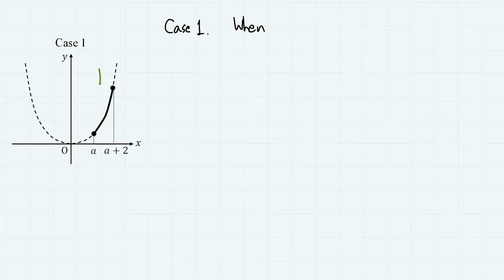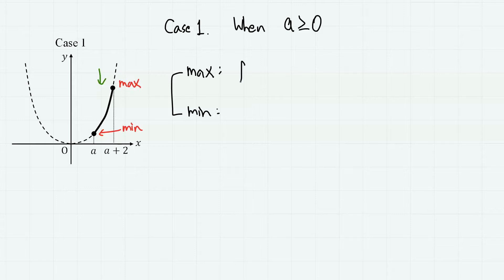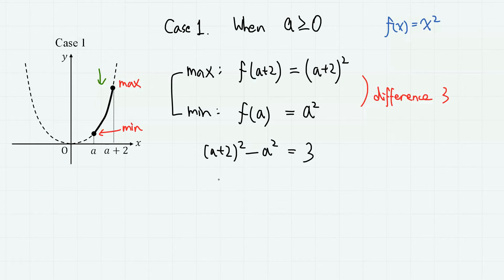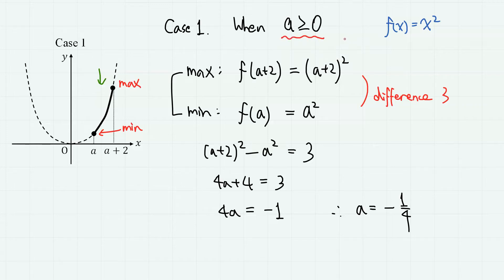In the first case, the domain is on the far right side, where a ≥ 0. The maximum value of f(x) occurs at x = a + 2, so it is (a + 2)². The minimum value is at x = a, so it is a². The difference must be 3: (a + 2)² − a² = 3. Expanding, a² cancels and we get 4a + 4 = 3, so 4a = −1, giving a = −1/4. However, since we need a ≥ 0, this value is invalid.